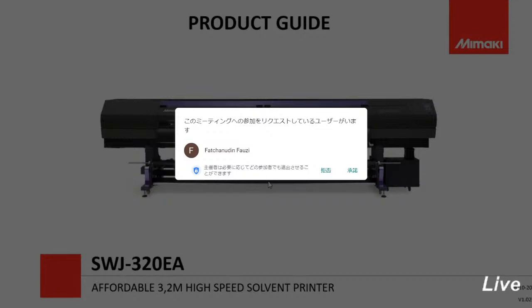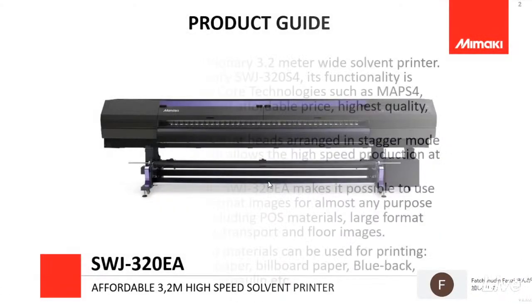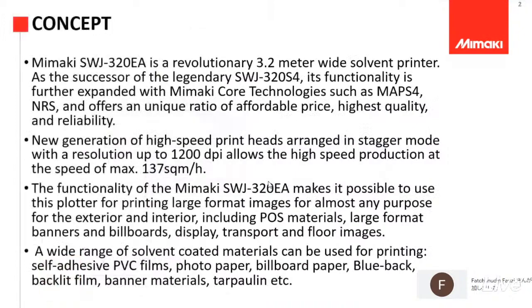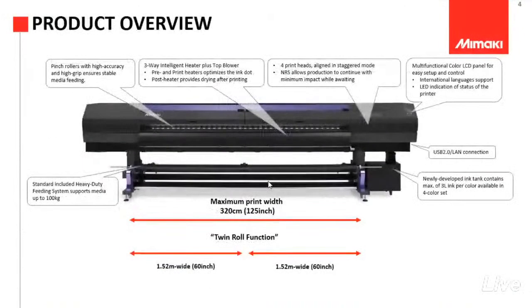SWJ 320EA ini adalah bentuk penyempurnaan dari seri sebelumnya yaitu SWJ 320S2 dan S4. Kita lihat saja di sini spesifikasinya. Dari segi bentuk, ini bentuknya sudah jauh lebih keren. Jadi dia berwarna hitam, dan banyak sekali fitur-fitur yang sudah di-upgrade dari seri sebelumnya.